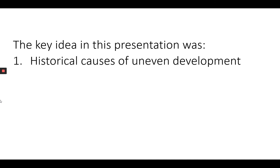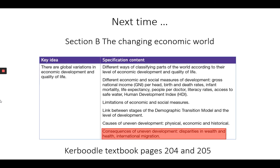That's it — we've now covered all of the causes of uneven development: physical causes, economic causes, and historical causes. So now you know why some parts of the world like the UK are well developed, and why other parts of the world are struggling with low levels of development. Next time we will start to look at the remaining content for this part of the specification — the red highlighted section — which is all about the consequences or impacts of uneven development. If you wish to read ahead, we'll be using pages 204 and 205 of the Caboodle textbook. That's it for now, see you soon.